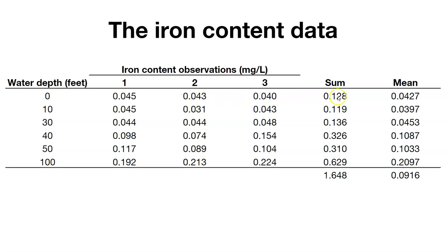We can then look at those. We could sum all those values if we wanted to know the total amount of iron content at those three different water depths. And then we could take the mean value there.